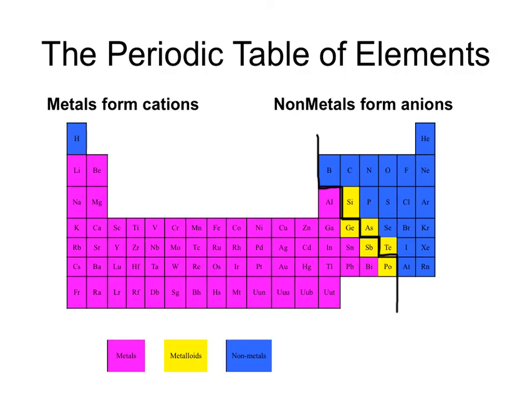If you take a look at the periodic table of elements, I've drawn a heavy black line to separate the metals from the nonmetals. Metals form cations, and nonmetals form anions.